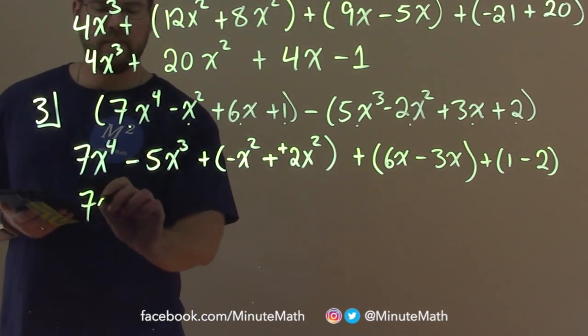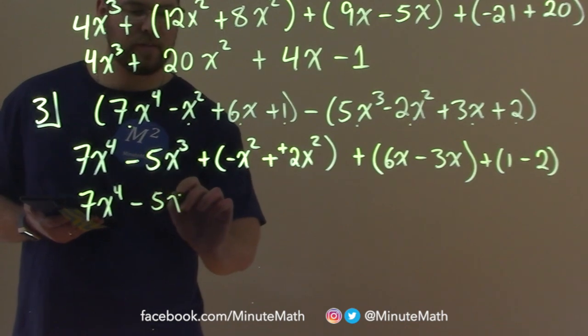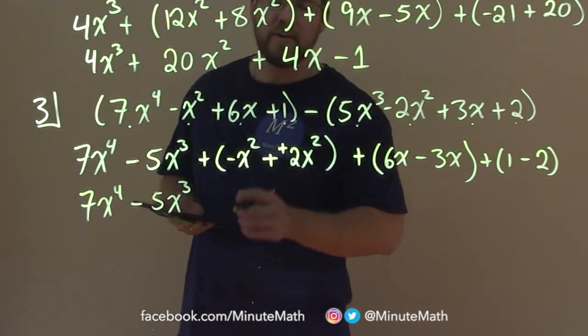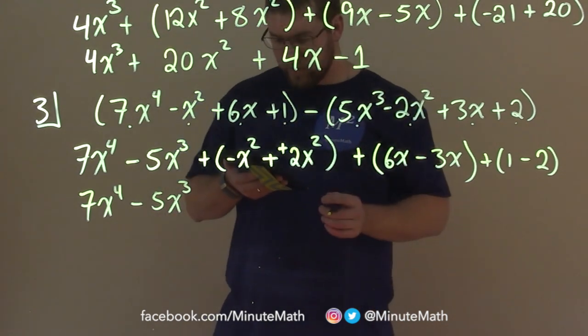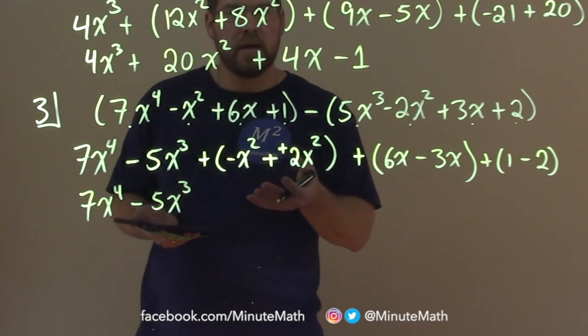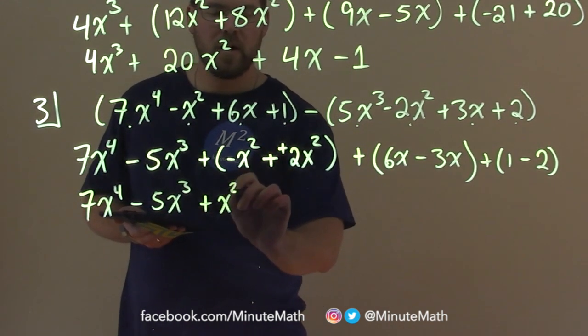Now we can simplify by combining our like terms. Nothing with degree 4, so we have 7x to the 4th power, minus here 5x to the 3rd power. No other like terms. And now we have negative x squared plus 2x squared, which really negative 1 plus 2. Again, look at the coefficients, we're combining our like terms. We just have a positive 1, so we have positive x squared. And note that I don't put a 1 in front of the x squared.